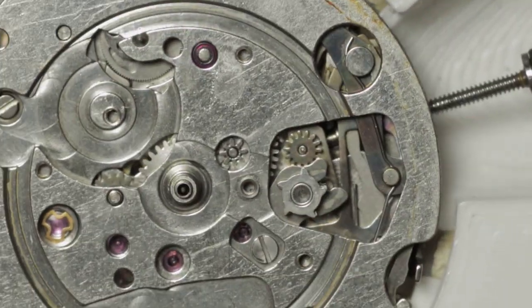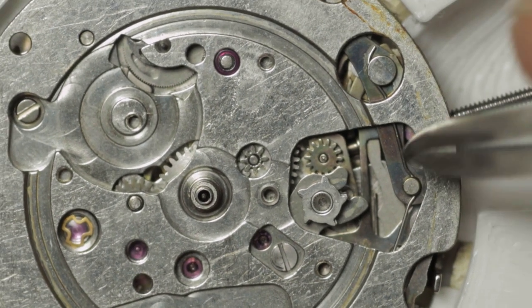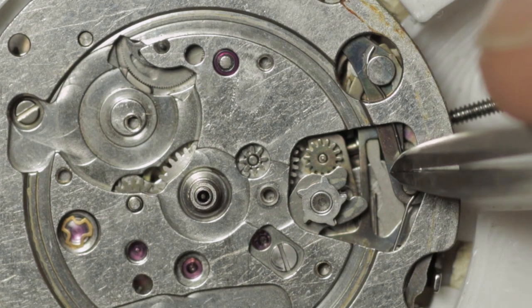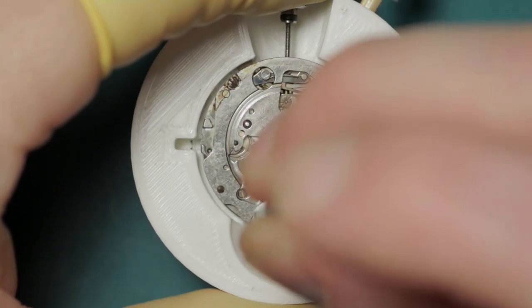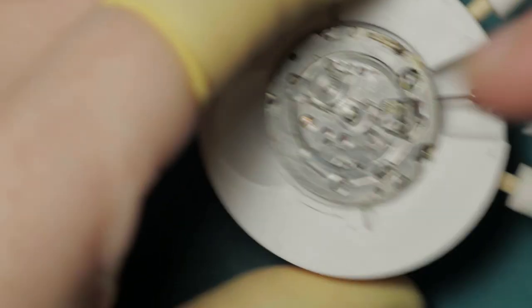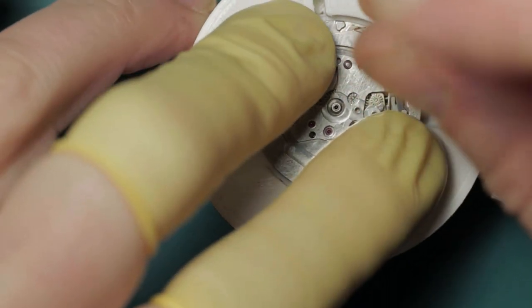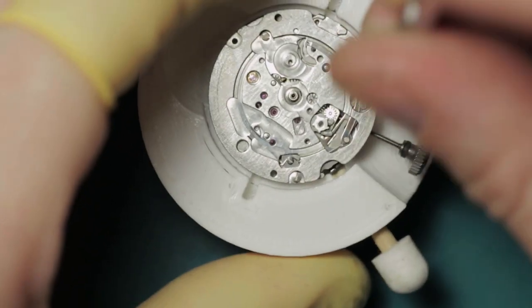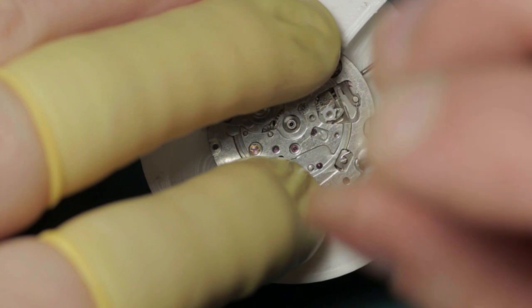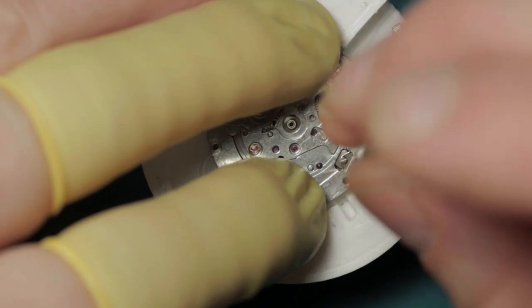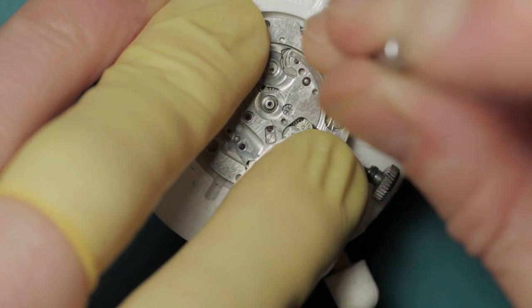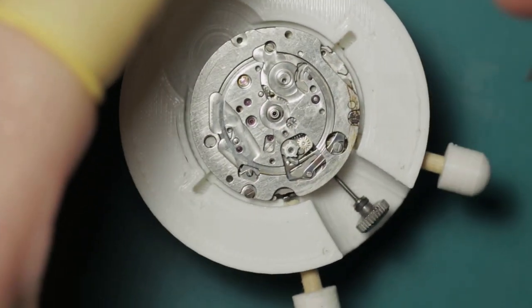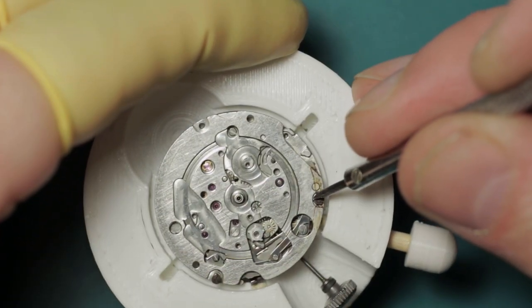Rather than push on anything here, I'm just going to pop this plate off so we can take a look. Interestingly, I couldn't refit the stem when it had been removed because the yoke was stuck in position and the clutch had slipped from its location. The plate is secured by three screws. These screws are accessible with or without the calendar works removed.